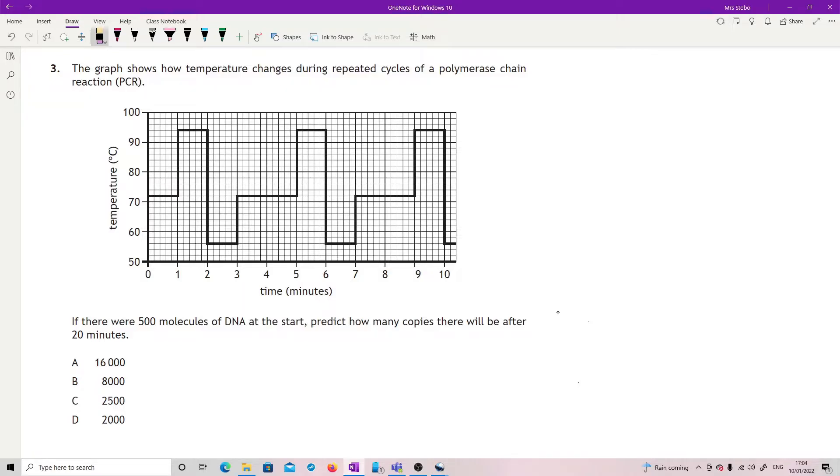Question three: the graph shows how temperature changes during repeated cycles of a polymerase chain reaction. If there were 500 molecules of DNA at the start, predict how many copies there will be after 20 minutes. There's a trick to this one. First thing you're going to have to figure out is how long is a cycle. This is repeated cycles, so I need to look for my pattern. My pattern repeat is at four minutes because the next one does exactly the same pattern over four minutes.